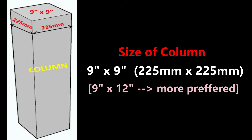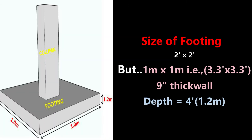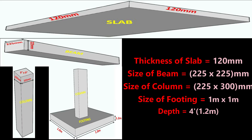The minimum size of column for a single story building is 9 inch by 9 inch, that is 225 mm by 225 mm, but nowadays 9 inch by 12 inch columns are more preferred. The minimum size of foundation is 1 meter by 1 meter, that is 3.3 feet by 3.3 feet, for a 9 inch thick wall in a single story building, and minimum depth is 4 feet, that is 1.2 meters.